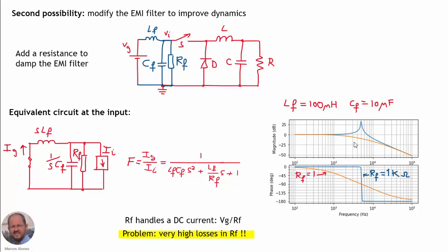Comparing responses with a very high RF (underdamped filter) versus a small RF value: with small RF, the magnitude response is smoother and the phase is smoother, helping stabilize the system. However, the problem is that RF will handle the full DC voltage at the input, causing very high power losses. So this is not a practical solution.